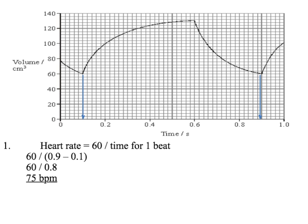The time taken for one beat — you're usually looking for peak to peak or trough to trough. On the graph we've got two troughs, so the time between them: 0.9 minus 0.1 is 0.8 seconds. So 60 divided by 0.8 gives an answer of 75 beats per minute. The heart rate is 75 beats per minute.